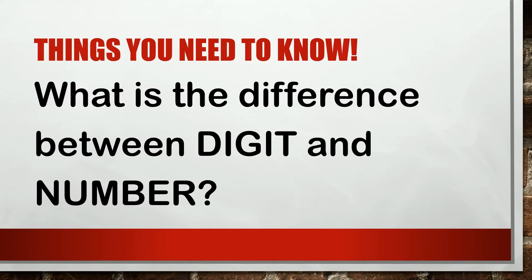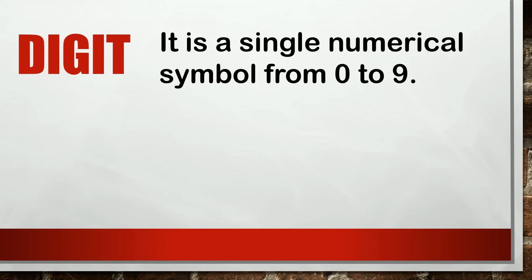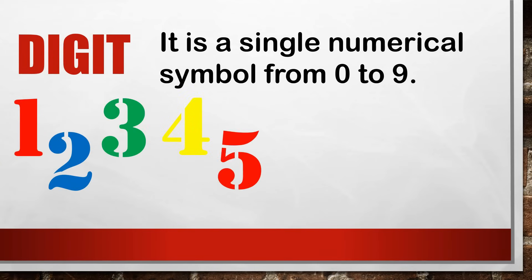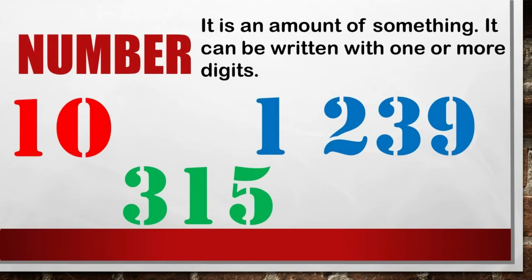Let us now discuss the place value and value of a digit in numbers up to 100,000. Things you need to know: what is the difference between digit and number? A digit is a single numerical symbol from 0 to 9. While a number is an amount of something, and it can be written with one or more digits.